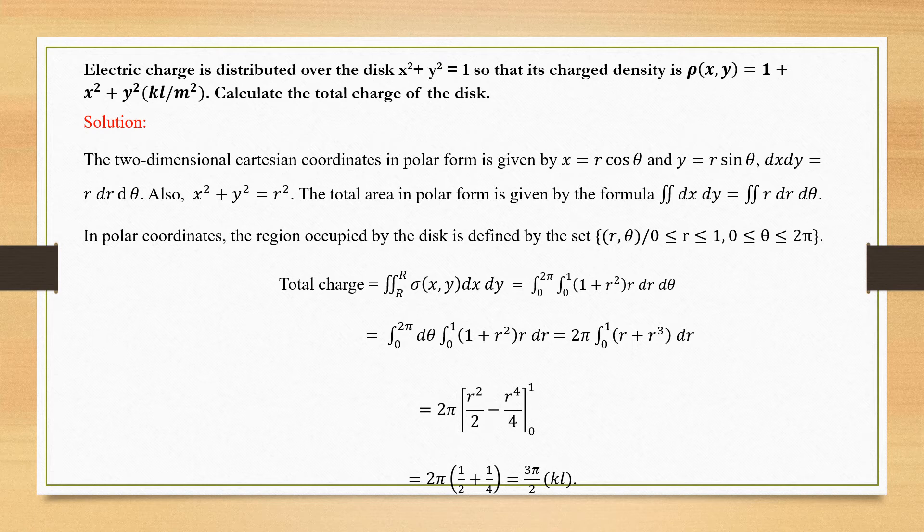Integrating dθ gives θ evaluated from 0 to 2π, so the upper minus lower limit gives 2π. Then integrating r gives r²/2 and integrating r³ gives r⁴/4, both evaluated over limits 0 to 1. Substituting the upper limit gives 1/2 + 1/4.